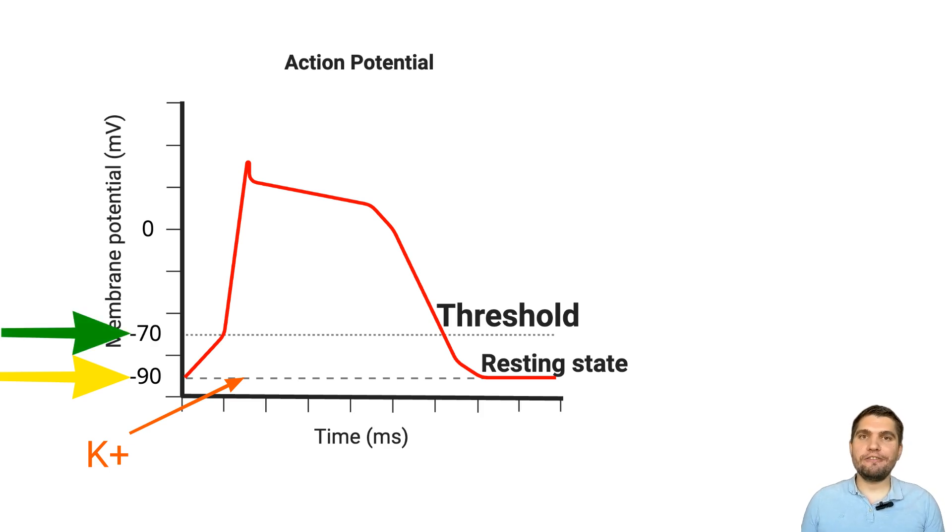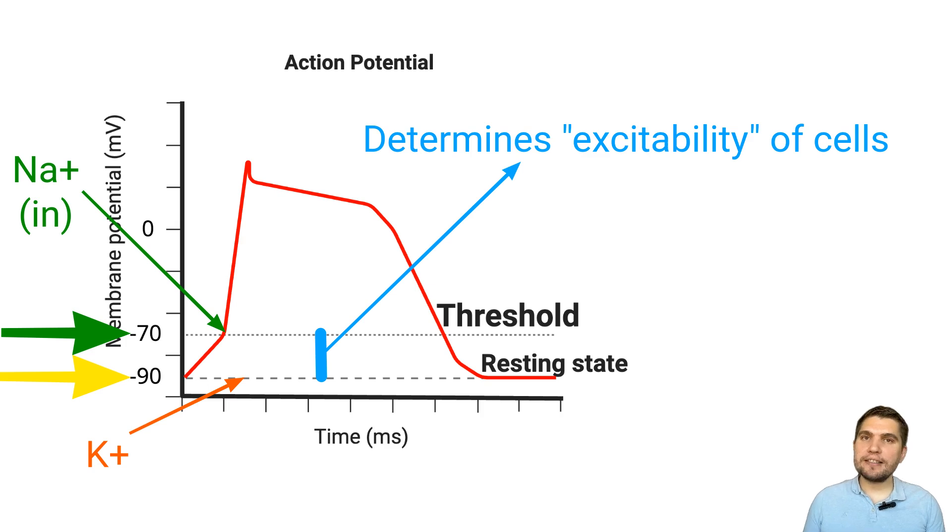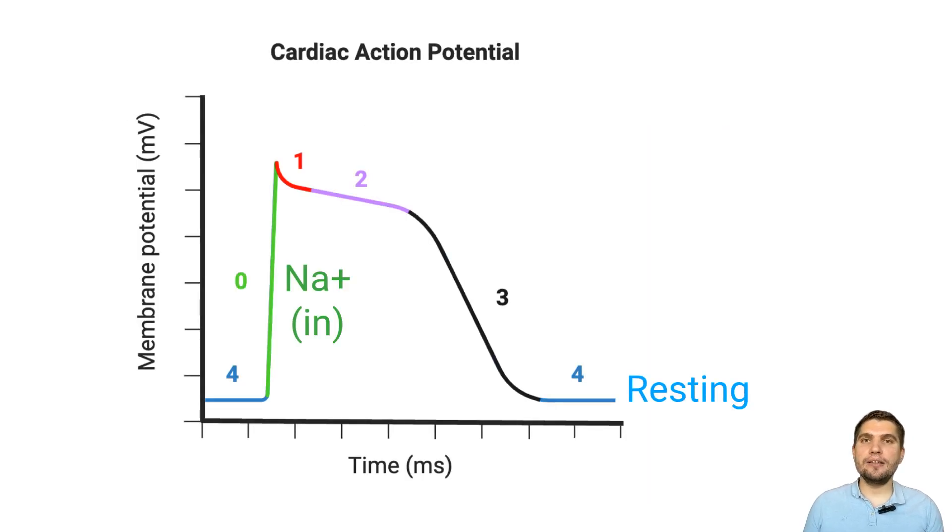An action potential fires when the membrane potential reaches a specific threshold, rising from the baseline of minus 90 millivolts to around minus 70 millivolts. This is known as the threshold potential. Once the threshold potential is reached, it causes sodium channels to rapidly open. The sudden rush of sodium ions into the cell causes rapid depolarization, marking phase 0.